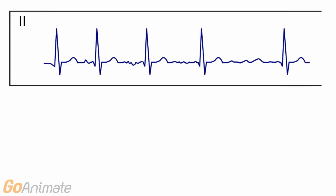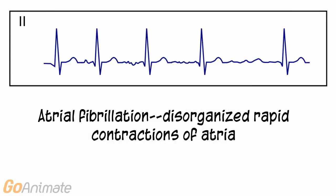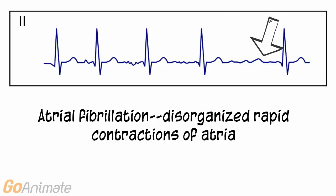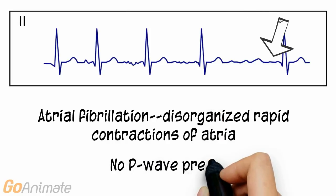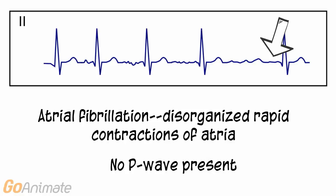Atrial fibrillation consists of disorganized rapid contractions of the atria. There are no P waves present in atrial fibrillation.